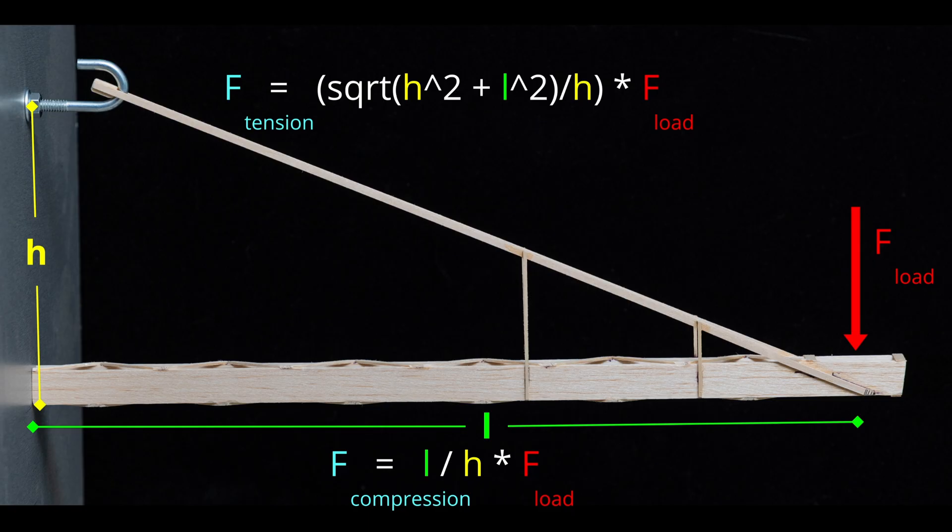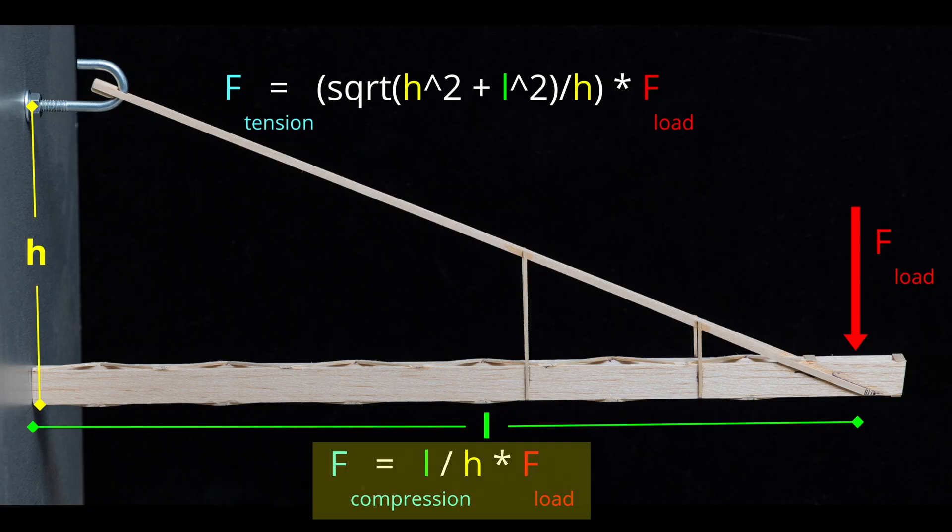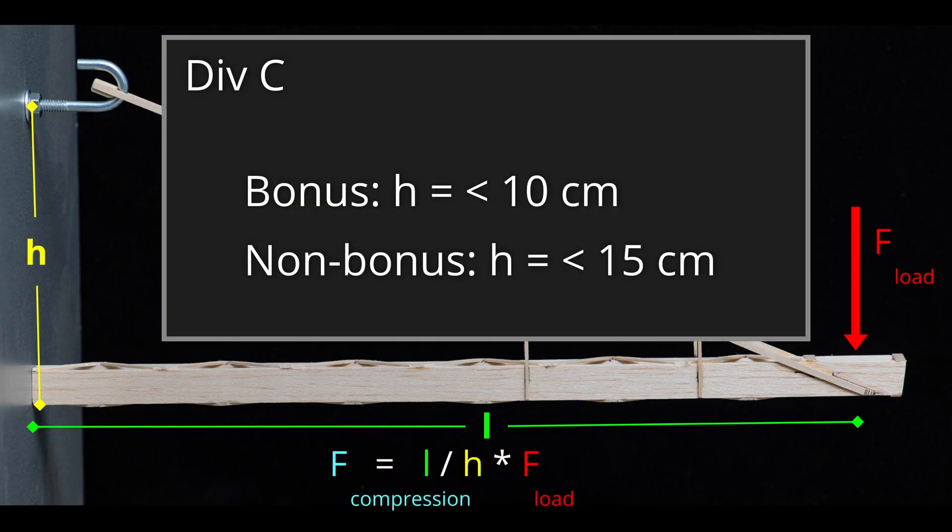For the purpose of deciding if it's worthwhile to attempt the bonus design or not, we can just use the simpler compression force formula, which is just the ratio of the length divided by the height times the applied vertical load. For Division C, the only design difference between the bonus and non-bonus is the height H.